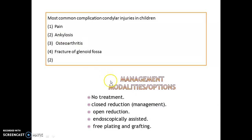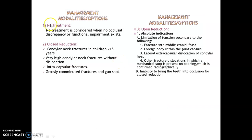The most common complication of condylar injuries in children is ankylosis. Management options include: no treatment if there is no malocclusion, closed reduction, open reduction, endoscopically assisted reduction (now commonly used to avoid injury), free plating, and grafting when there is bone damage or bone loss.